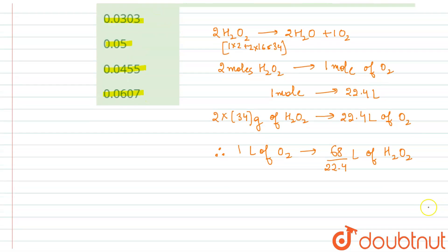Now we are given here 20 volume. So this 20 volume means that the labeling means 1 liter H2O2 has 20 liter volume of O2. So therefore, 20 volume, or you can say 20 liter of oxygen, will have 68 upon 22.4 into 20 liter of H2O2.